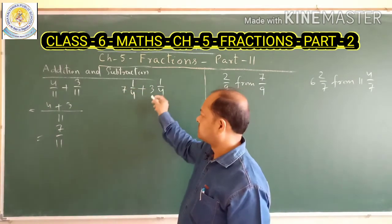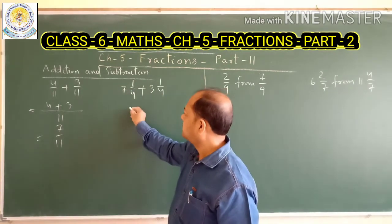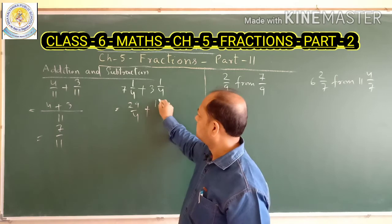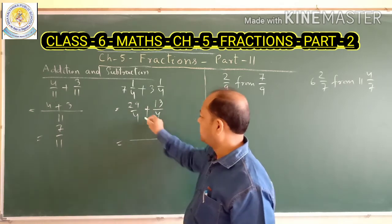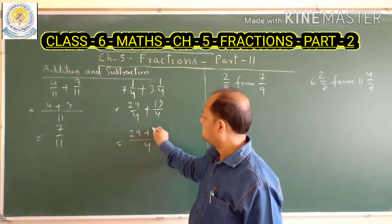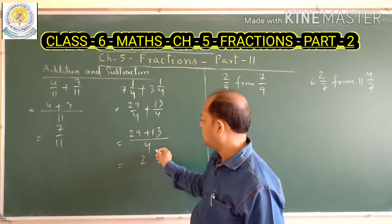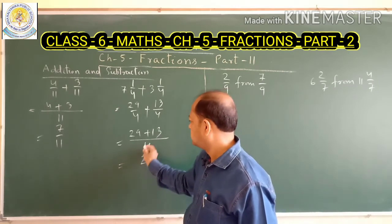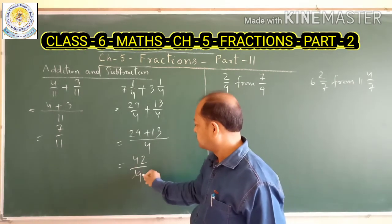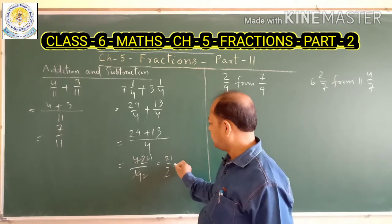Now this is a mixed fraction. We have to first convert it into an improper fraction. 7 fours are 28, plus 1 is 29, so it equals 29 upon 4. Similarly, 4 threes are 12, plus 1 is 13, giving 13 upon 4. The denominator is the same, so 29 plus 13 in the numerator gives 42 upon 4. This can be simplified: 42 divided by 2 over 4 divided by 2 gives 21 upon 2.